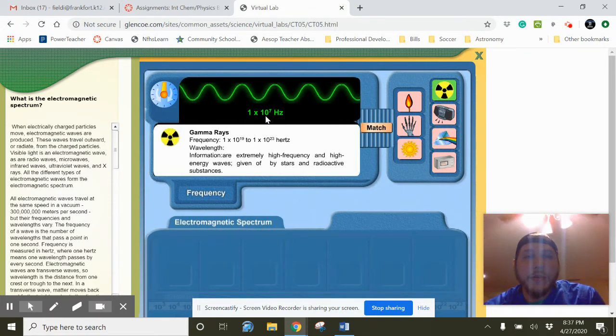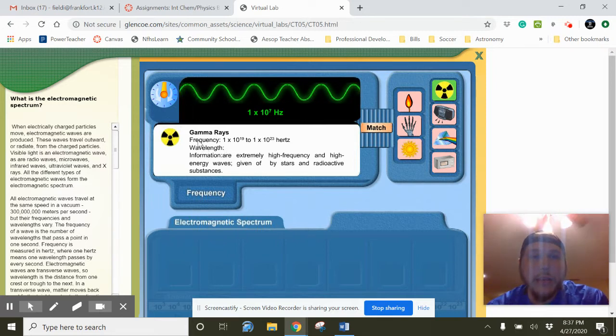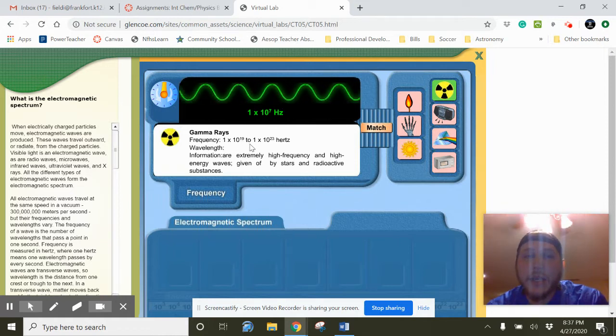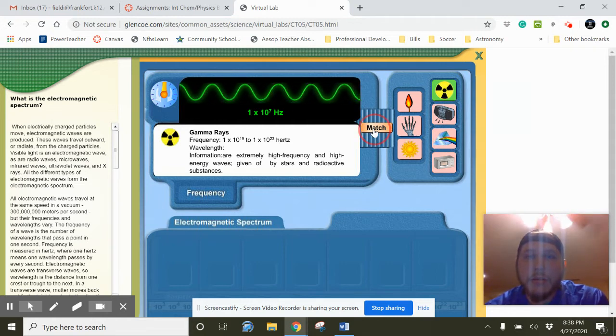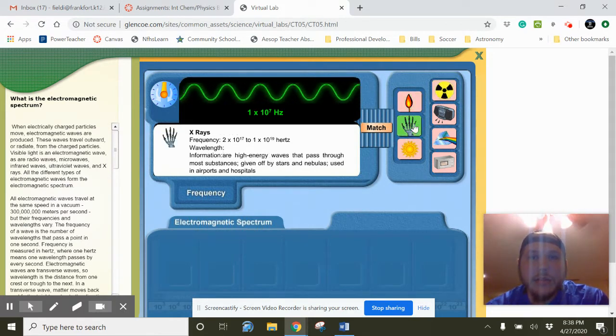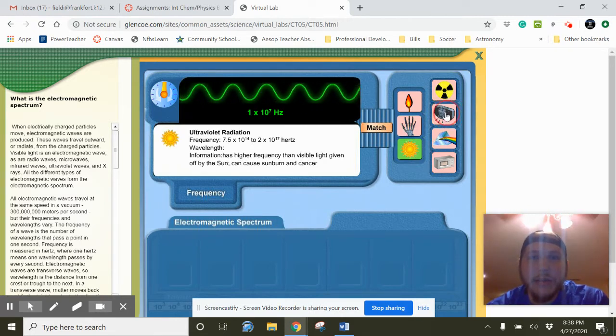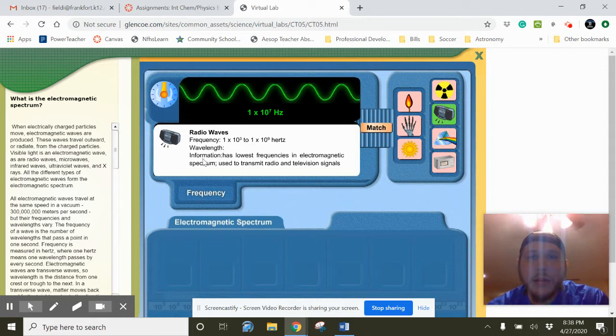We're going to go through and we're going to have to match them. This very first one, one times 10 to the seventh Hertz, that's the frequency of the waves. So we've got to match that. Well, I have gamma ray selected and it says its frequency is one times 10 to the 19th to one times 10 to the third Hertz. So I've hit the match button. Nothing's happening. So that's not right.